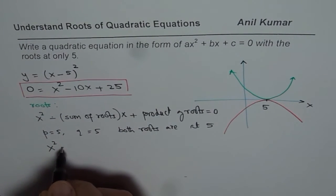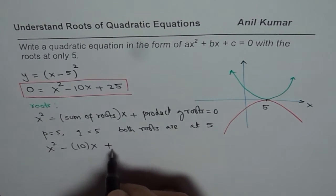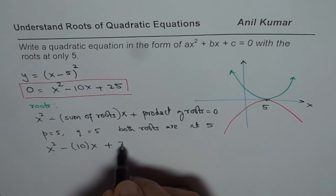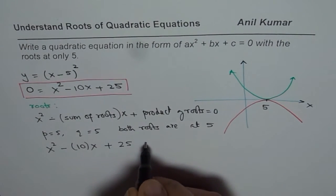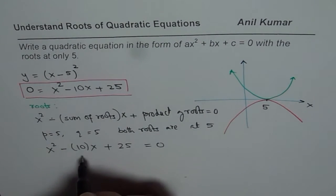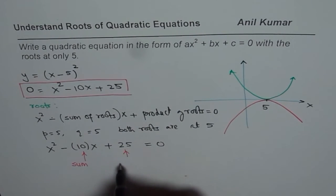So we get X squared minus sum, which is 10 times X plus product, which is 5 times 5, 25 equals to 0. Do you get that? So we get our equation straight away, where this is the sum. This is the sum and this is the product. So we could also get in standard form straight from this application.